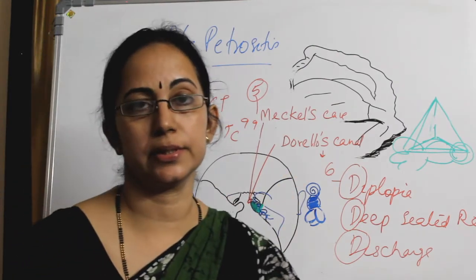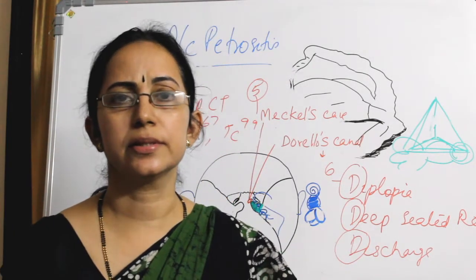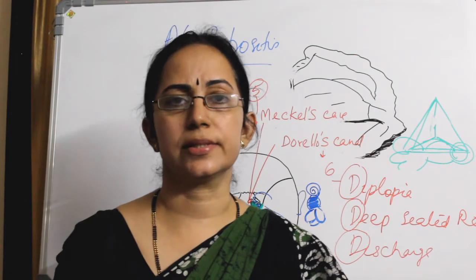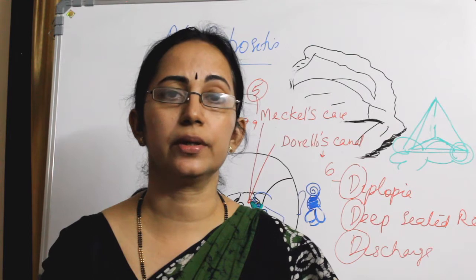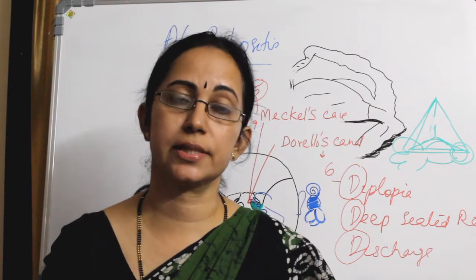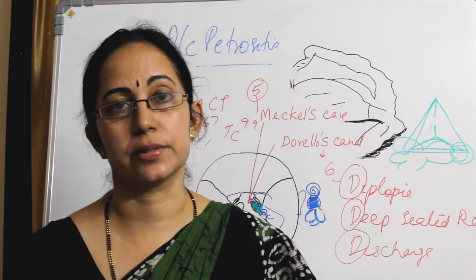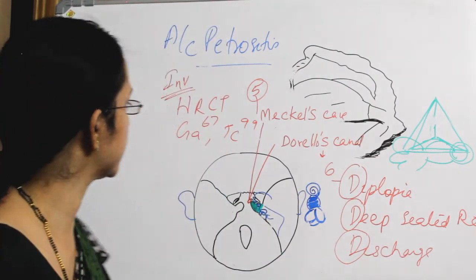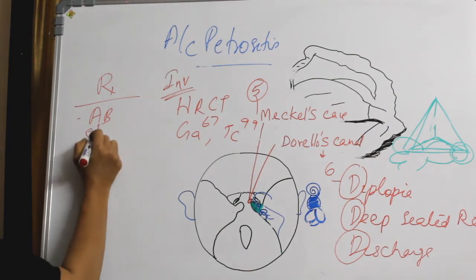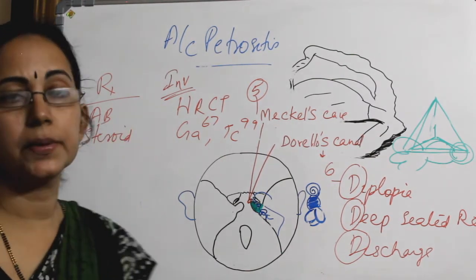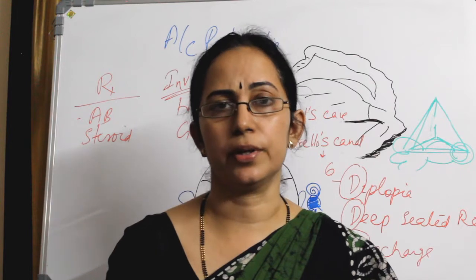Once you have diagnosed a case of acute petrositis, what is the treatment? In most cases this will respond to medical treatment — high-dose antibiotics for a minimum of 10 days according to culture sensitivity of the pus — and also high-dose steroids. 90% of cases will respond to antibiotics and steroids.